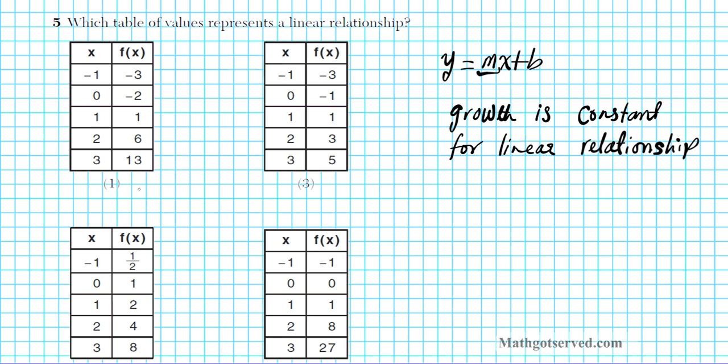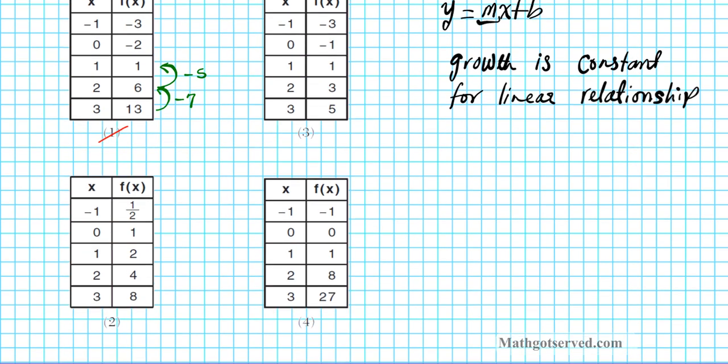So let's take a look at option number 1. From 13 to 6, that is, what is that, that's negative 7, right? Because 13 minus 7 is 6. From 6 to 1, that is a growth of what? Negative 5. Uh-oh, these two are different. So since these two are different, that means the growth rate is not constant, hence this is not a linear relationship. So 1 is not the answer.